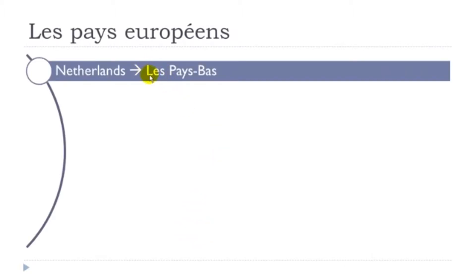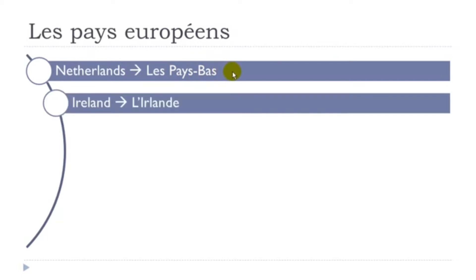Les Pays-Bas. The final S is not pronounced, same for Pays. And then bas. Les Pays-Bas. Then l'Irlande. Remember this I — it should be pronounced like 'ee': Irlande. The A-N gives a nasal 'en', then D, and the final E is not pronounced. Irlande.